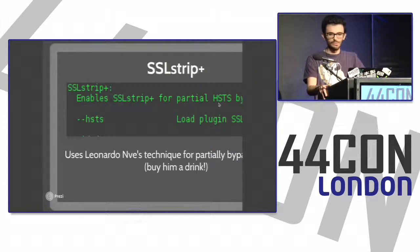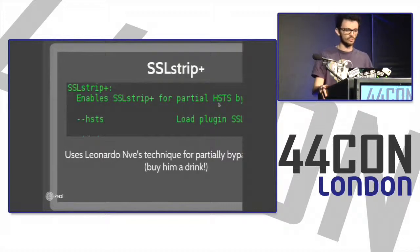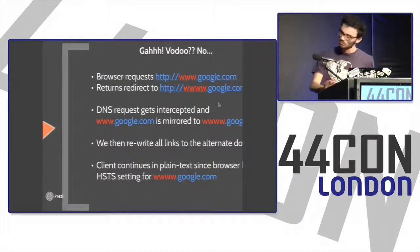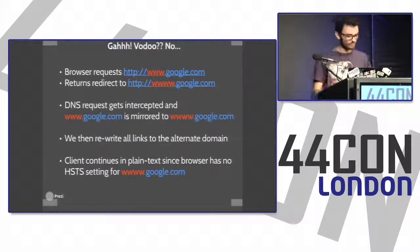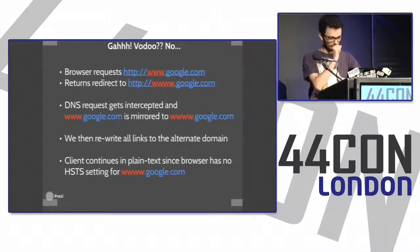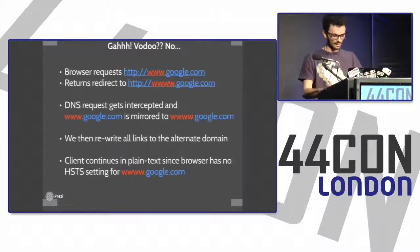SSL Strip Plus — Leonardo NVE released a proof of concept to partially bypass HSTS a couple of years ago. It exploits DNS server changes to bypass certificate pinning in browsers. The browser requests Google.com over HTTP normally; SSL Strip Plus returns a redirect to wwww (four W's) Google.com. It mirrors that to the original Google.com, loads the original web page, rewrites all links in the HTML to the alternate domain, and the client continues in plain text since the browser has no HSTS setting for that spoofed domain.